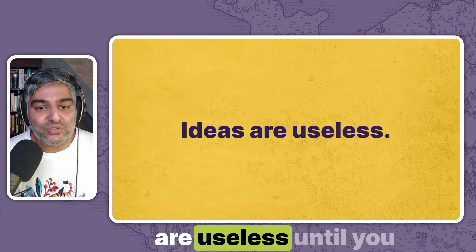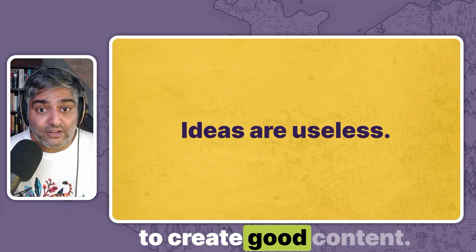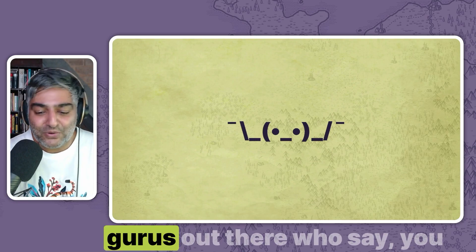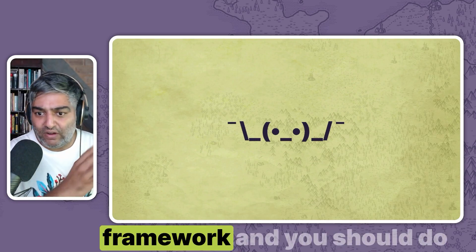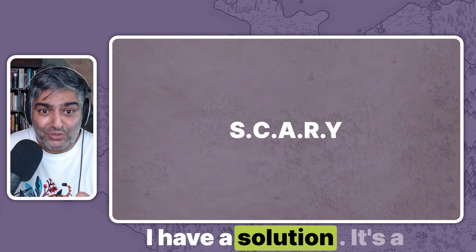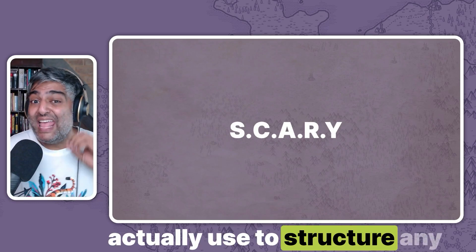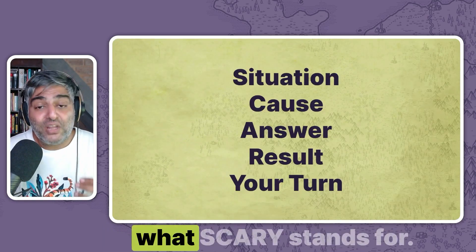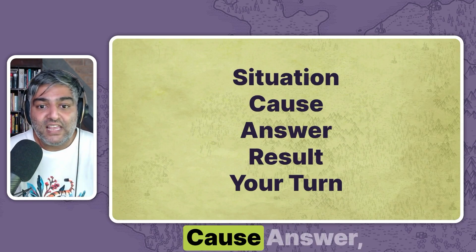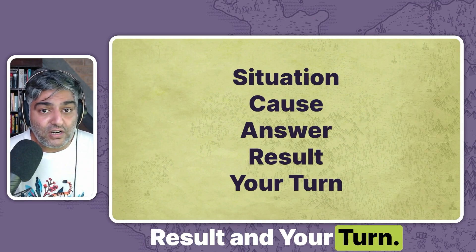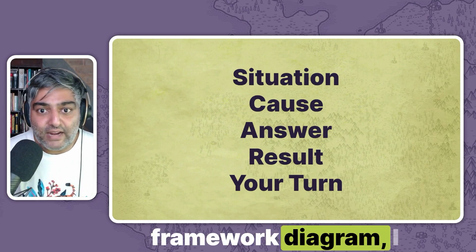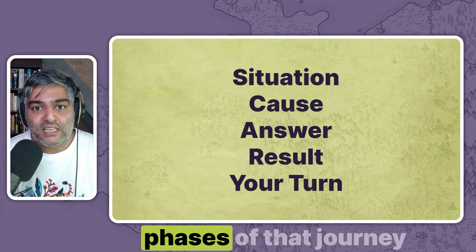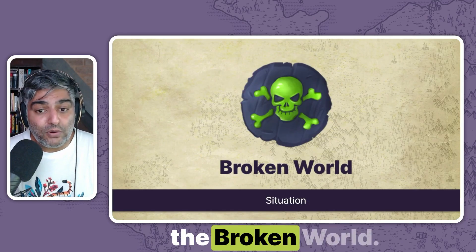The problem is ideas are useless until you can actually use them to create good content. And when you go to the internet, there are so many different marketing gurus out there who say you should create content like this and use this framework and do this and do that. I have a solution — it's a framework that you can actually use to structure any piece of marketing content. The way you do that is very simple. Number one, you understand what SCARY stands for: situation, cause, answer, result, and your turn. And when you look back at that Put the Player First framework diagram, discover that each of these map to different phases of that journey. Situation maps to the broken world.